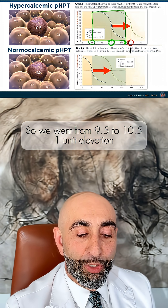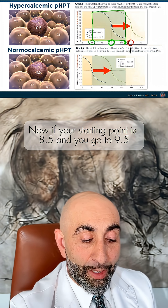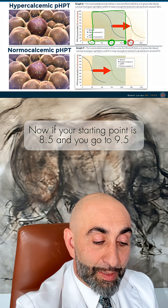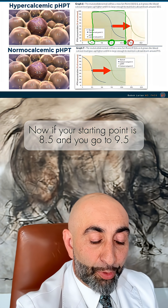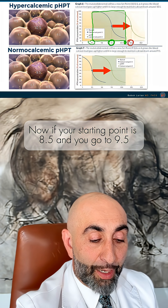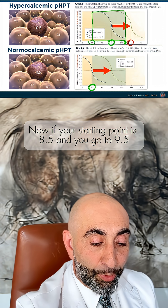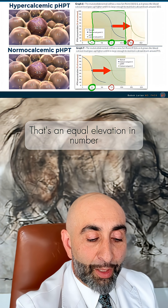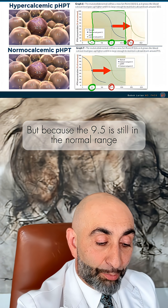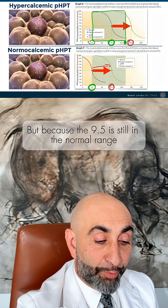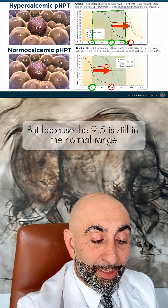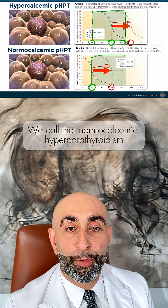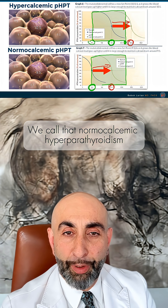That's a one unit elevation. Now, if your starting point is 8.5 and you go to 9.5, that's an equal elevation in number. But because the 9.5 is still in the normal range, we call that normal calcemic hyperparathyroidism.